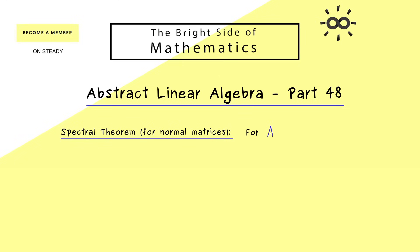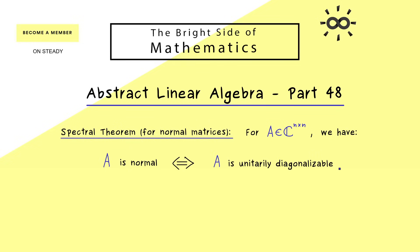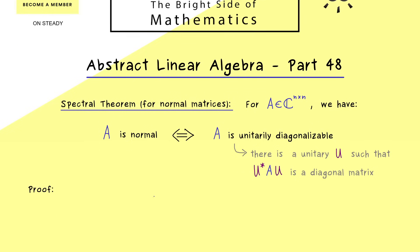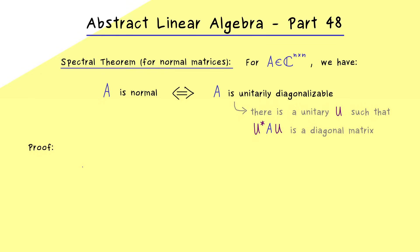The matrices we consider here are complex-valued square matrices. The attribute 'normal' means that the adjoint of A commutes with A. The spectral theorem tells us that being normal is equivalent to A being unitarily diagonalizable, which means we can transform A into a diagonal matrix just by using a unitary matrix U, so that U* AU is a diagonal matrix. As already mentioned in the last video, this is the best case we can have in the Schur normal form, and in fact this Schur decomposition we will use in the proof of the spectral theorem.